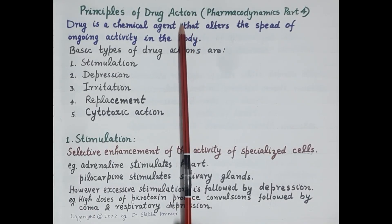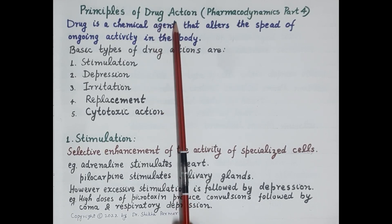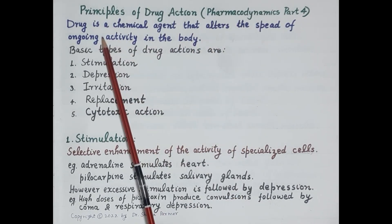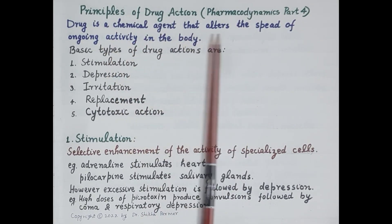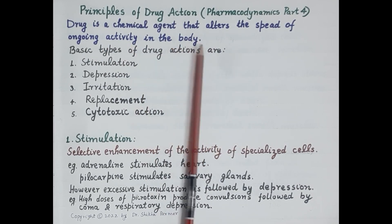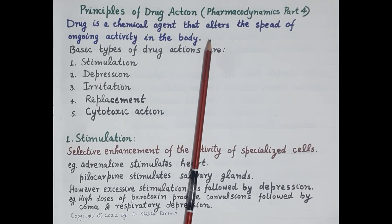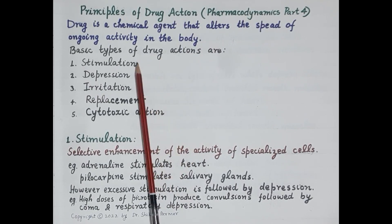Hello students, in today's video we are going to study the principles of drug action. This video is fourth in the series of videos on pharmacodynamics. A drug is a chemical agent that alters the speed of ongoing activity in the body. The action of a drug refers to its functions in various body systems. A drug cannot impart new activity or a new function, but it can alter the speed of ongoing activity or function in the body.